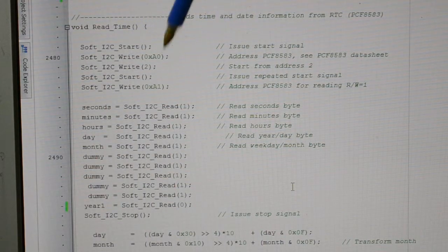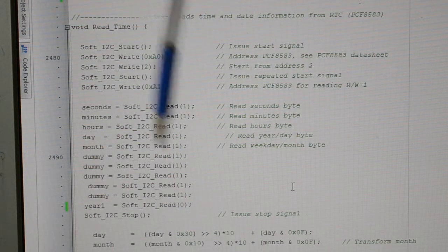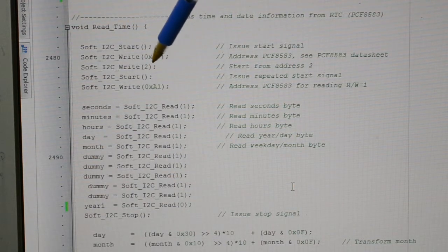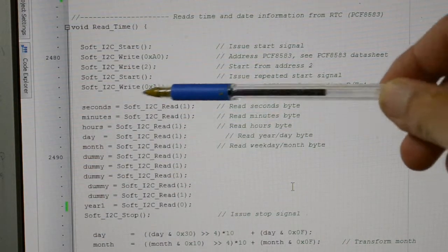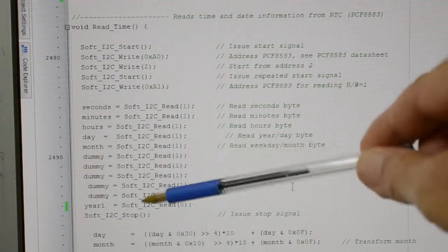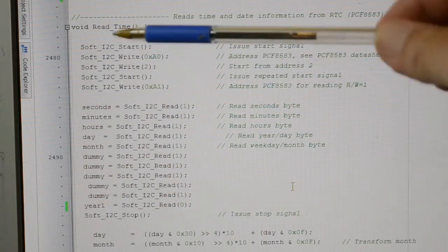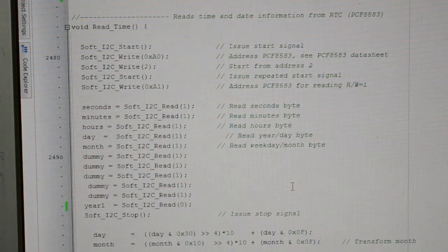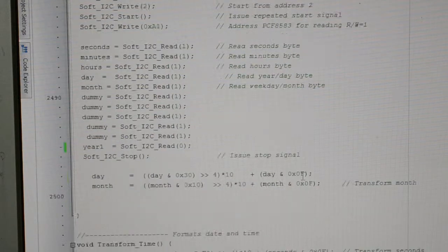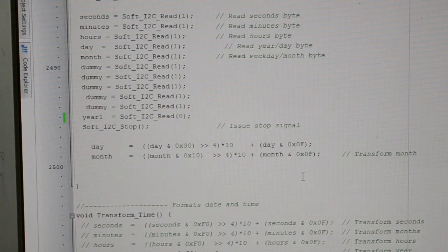So we've got the I2C start and everything, that's the address for the chip. I'll come back to this later. So we're starting at address 2, and we're just reading the seconds minutes hours, a couple of dummies in for where I'll put the year. But then it's this conversion down here that gets confusing.